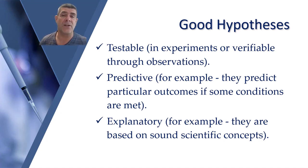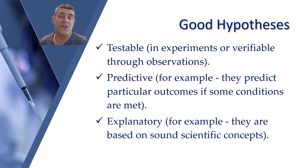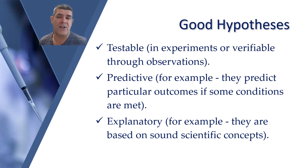Well-framed hypotheses possess the following qualities. They're testable — either in experiments or verifiable through some sort of observations. They're predictive — they have a particular set of outcomes in mind if certain conditions are met. And they can be explanatory — for example, they are based on some sort of sound scientific concept or theory; they're not just random ideas. This is another reason why we can sometimes mistake hypotheses for being just an educated guess. Whilst that's true, there's a little bit more to it. So tick them off: are they testable? Are they predictive? Are they explanatory?